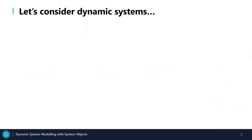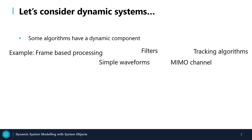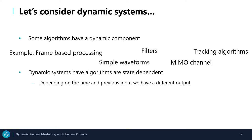Let's first consider dynamic systems. Some algorithms have a dynamic component, for example, frame-based processing. This could be a simple waveform, a filter, or something much more advanced like a MIMO channel or tracking algorithm. Dynamic systems have algorithms that are state dependent, meaning that depending on the time and the previous input, we have a different output.